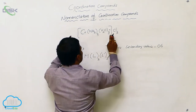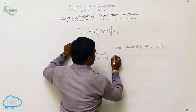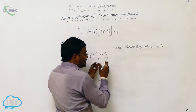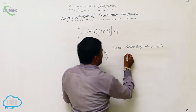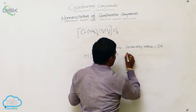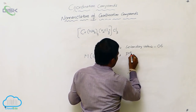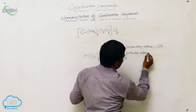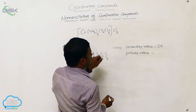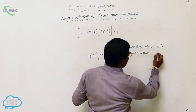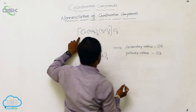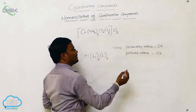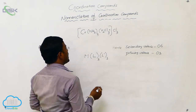Outside of the square bracket, three chlorines are present. Whatever ions are present outside the square bracket, the number of those ions is called the primary valency of this complex. How many chlorines are there? Three — hence the primary valency of this complex is three. So secondary valency is six and primary valency is three.